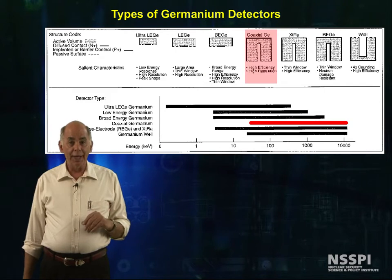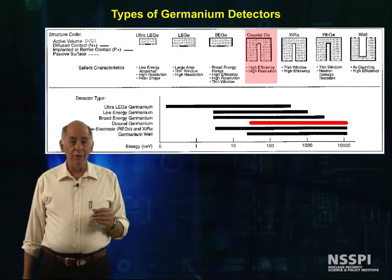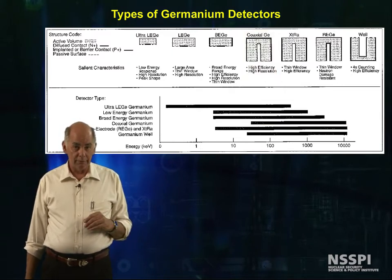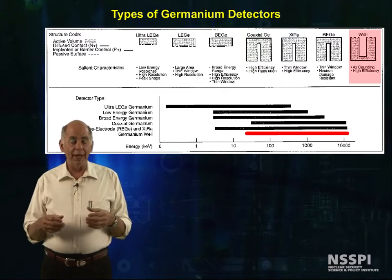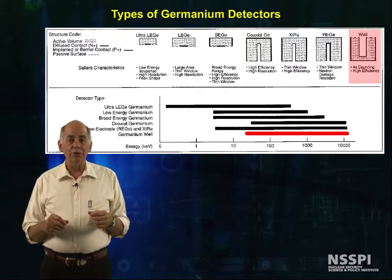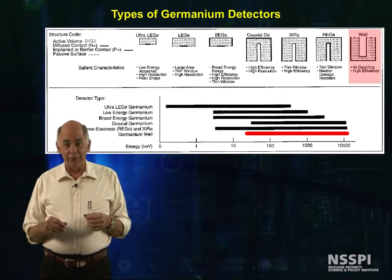Coaxial detectors give a lot of volume, but have a relatively large dead region at the surface, so they're only good for photons 50 keV and above. Well-type detectors are built with an inner well that holds small samples so that you can have almost a 4-pi geometry.